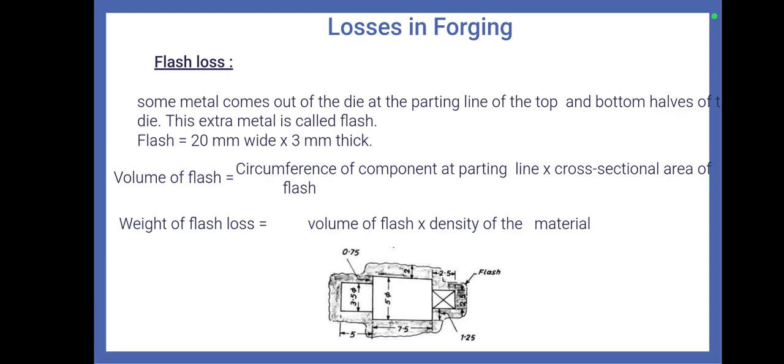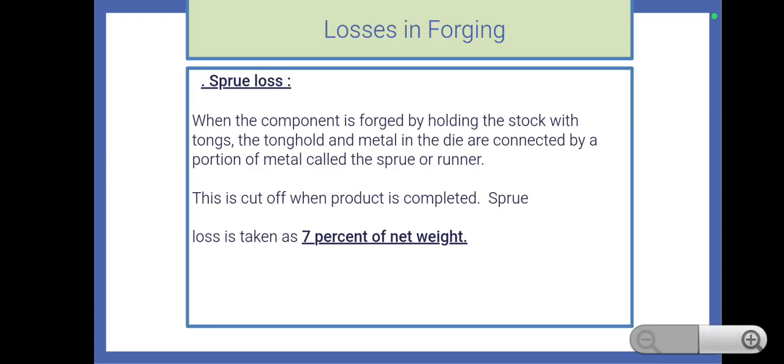The next one is sprue loss. The portion of the metal between the length held in the tong and the material in the die is called sprue or runner.